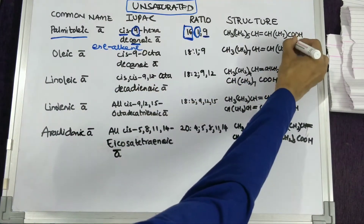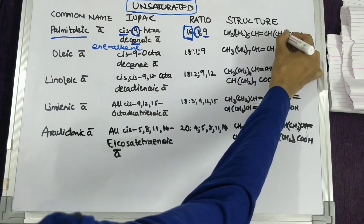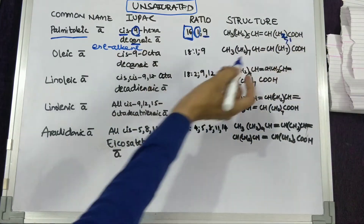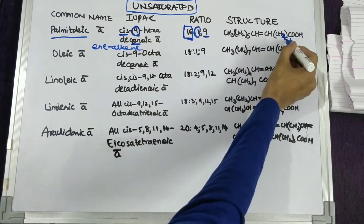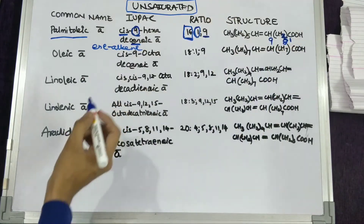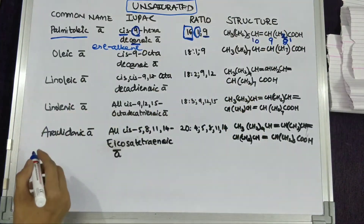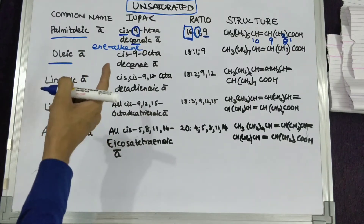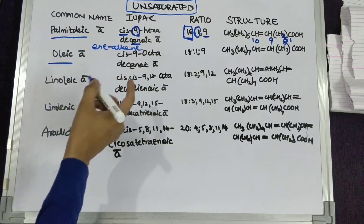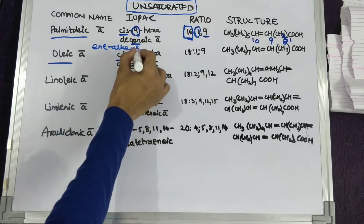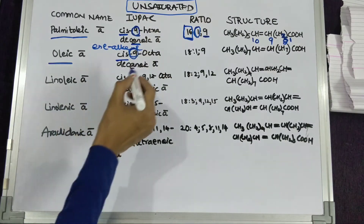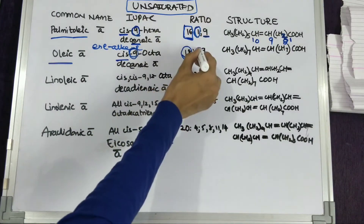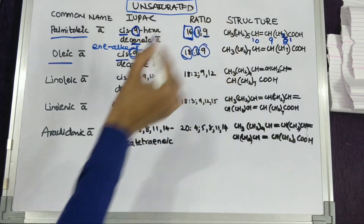Let's count the number of carbons: one CH2 seven times, that is 1 plus 7 equals 8, and the double bond is now on the ninth carbon. The IUPAC name for oleic acid is cis-9-octadecenoic acid. The structure is of 18 carbons, hence it is known as octadecenoic acid — 18 carbons with one double bond that is on the ninth carbon.